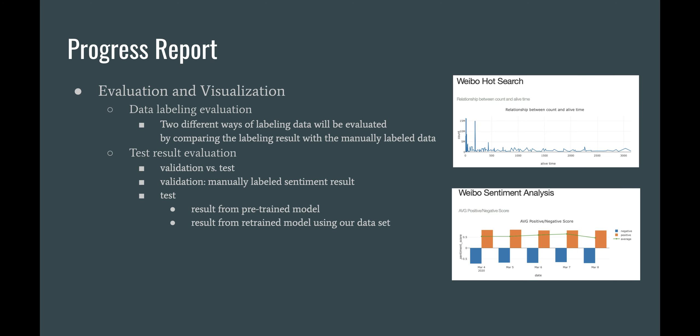For evaluation and visualization, we already made some pictures with our sample data. For labeling evaluation, there are two different ways by comparing labeling results with the manually labeled data. For test result evaluation, we'll do two types: first from the pre-trained model, and the second from the retrained model using our own dataset.